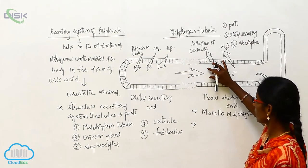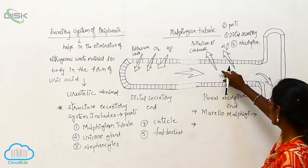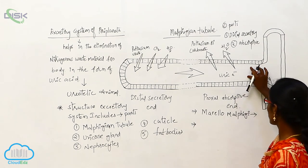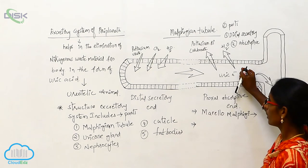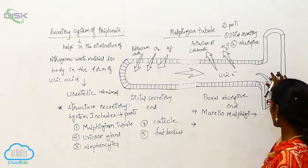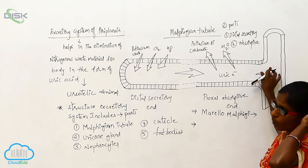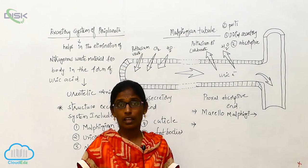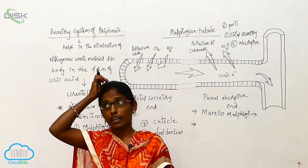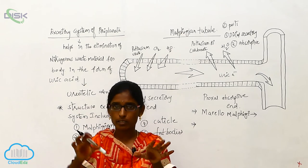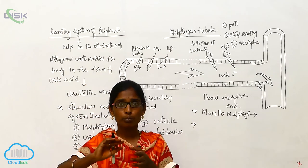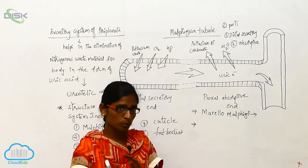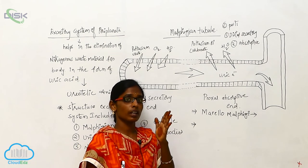The nitrogenous waste material — uric acid — is eliminated via the rectum through the anus. The uric acid goes from the colon to the ileum, then to the rectum. In the rectum, rectal papillae are present — these longitudinal papillae are used for the reabsorption of water content from the digested food material.